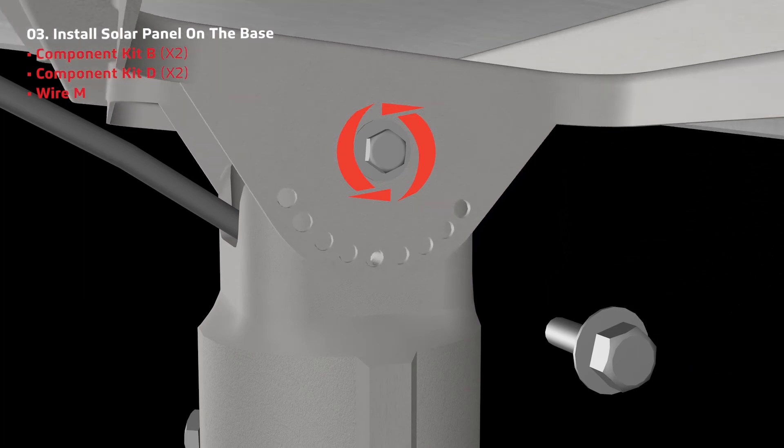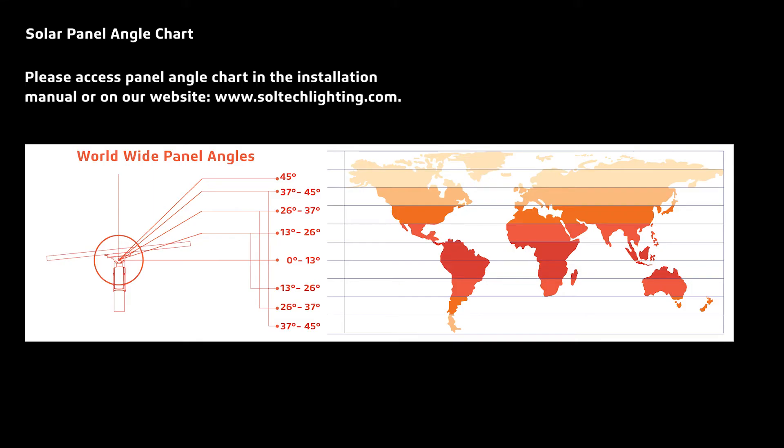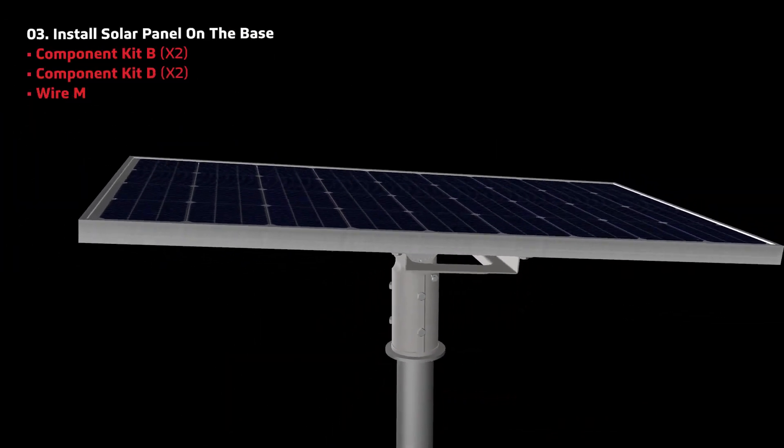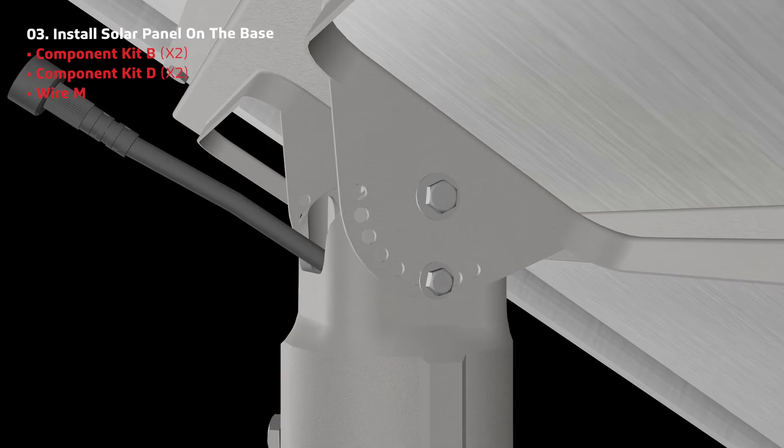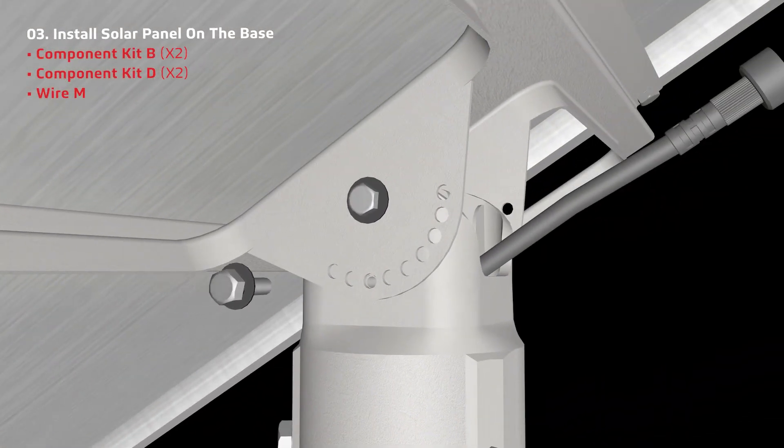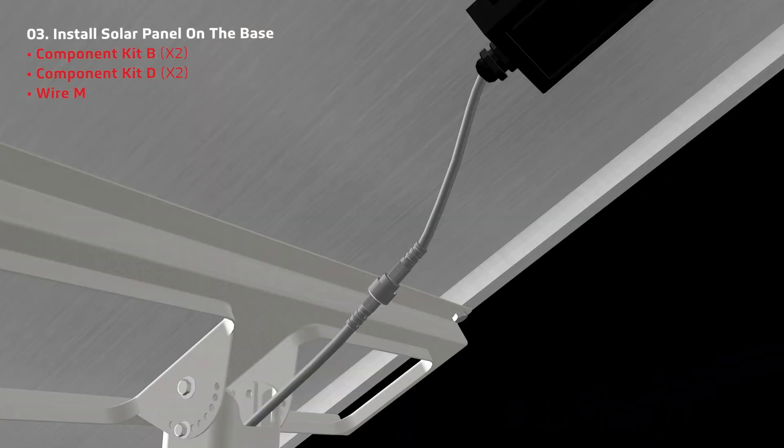The solar panel is adjustable. You can access the panel angle chart in the installation manual or on our website at www.solteklighting.com. Once you choose a desired angle, secure with screws from component kit D, and then connect the solar panel wire to wire M.